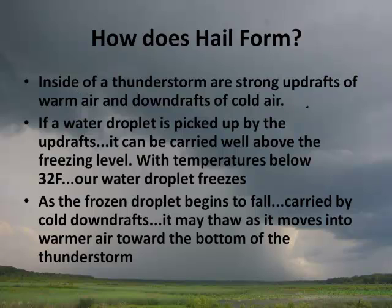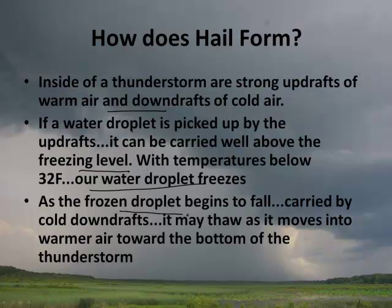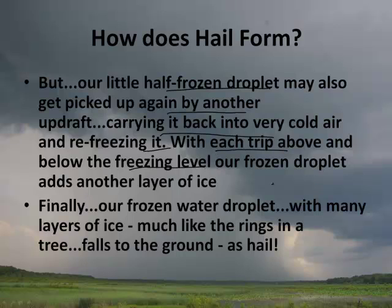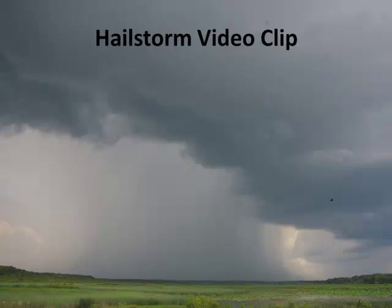Inside a thunderstorm are strong updrafts of warm air and downdrafts of cold air. If water droplets are picked up by updrafts they can be carried well above the freezing level. With temperature below 32°F they freeze. As the frozen droplet falls on cold downdrafts it may thaw in warmer air at the bottom — that would be rain. But a half-frozen droplet may get picked up again by another updraft, refreezing. With each trip above and below the freezing level, the frozen droplet gets bigger, adding another layer of ice — and finally falls to the ground as hail.